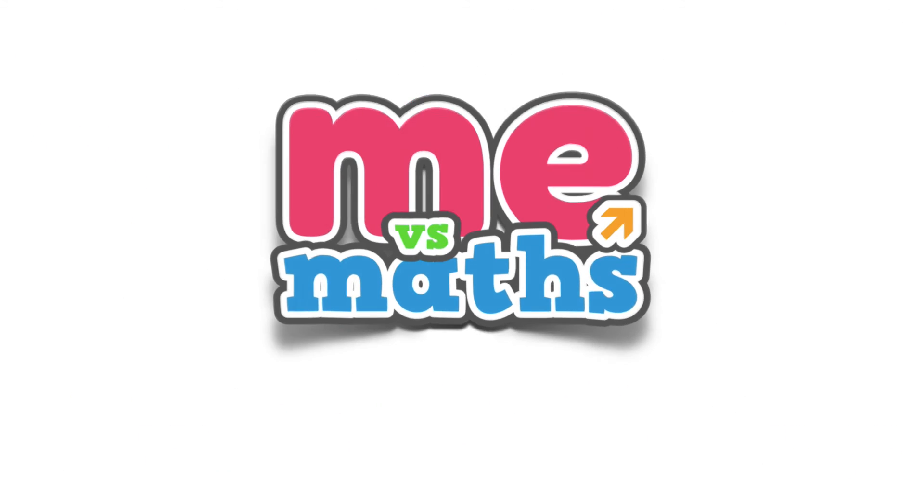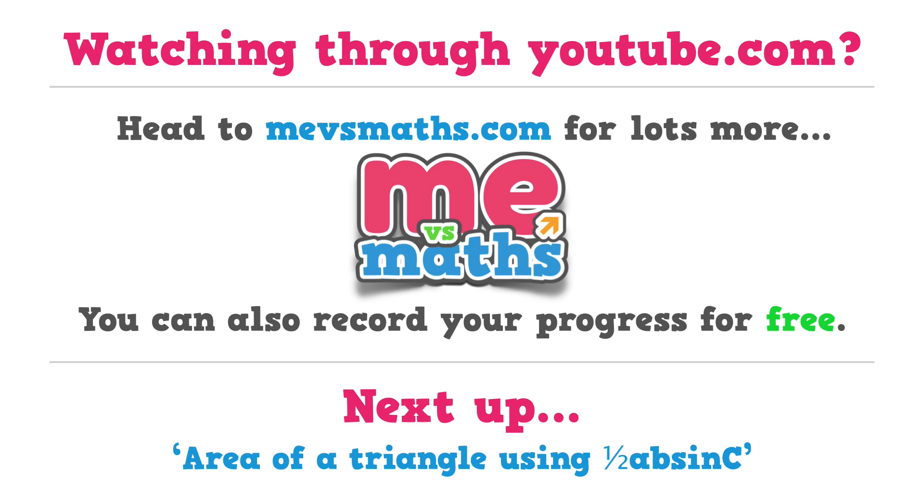Okay, all done. As I said at the very start, we did go through the working out very quickly in this tutorial, but hopefully we've achieved our aim of helping you to see the differences between the two rules and how you know when each should be used. The very final tutorial in our advanced trig section is on finding the area of a triangle using one final formula, half AB sine C. I hope you'll join me for that soon. As always, visit us at mevsmaths.com for lots more assistance to help you with your maths. Take care and bye for now.